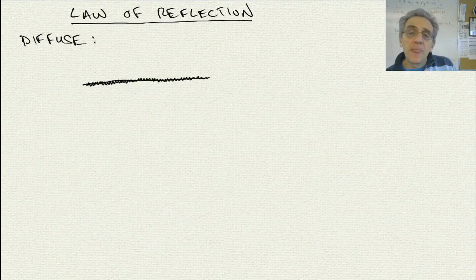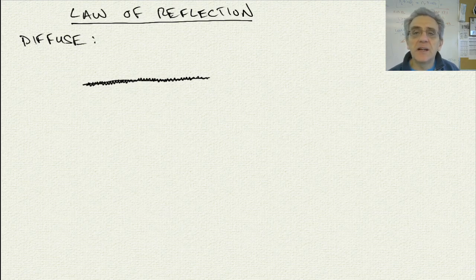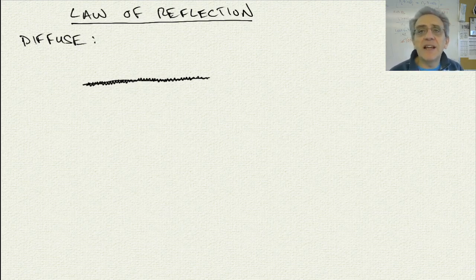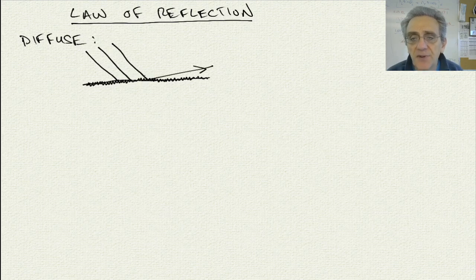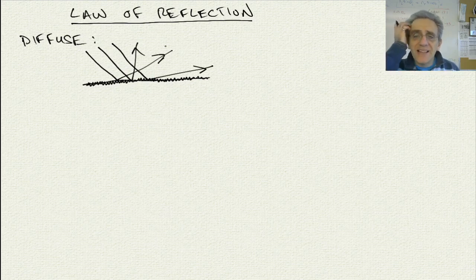Think of a white screen. When you go to watch a movie theater, or in your classroom where you have a white surface to project images on, it's usually not super smooth. Because if it's smooth, you're going to have light reflecting off it in a very specific direction. You don't want that. You want incoming light that is parallel, and you want it bouncing off in different directions. That's called diffuse.